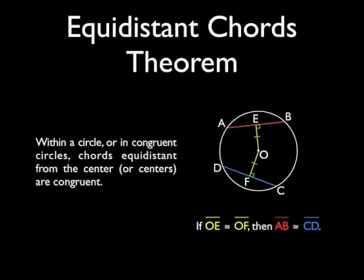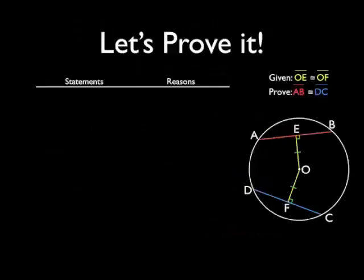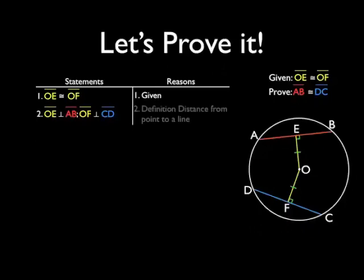Now instead of just doing a quick side proof here, I'm going to actually do this proof from scratch. Now we're given that the chords AB and CD are equidistant from the circle. That's what the segment OE is congruent to segment OF is all about. So of course that's given. Another thing that we need to know is that segment OE is perpendicular to AB as well as OF to CD. And that's the definition of distance from a point to a line.